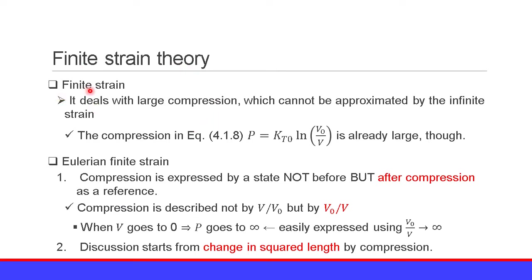Finite strain deals with large compression which cannot be approximated by infinitesimal strain. Among various kinds of finite strain theories, I introduce the Eulerian finite strain theory. There are two features of the Eulerian finite strain theory.